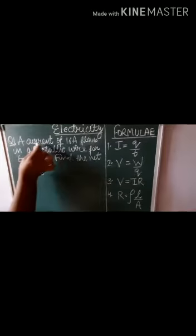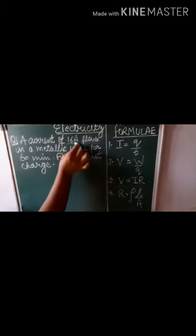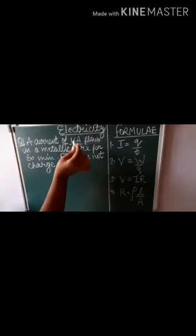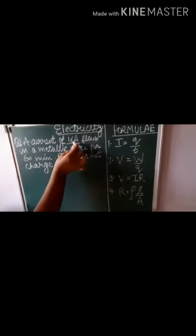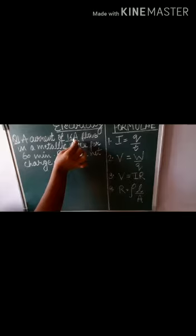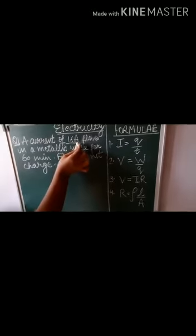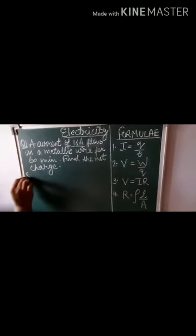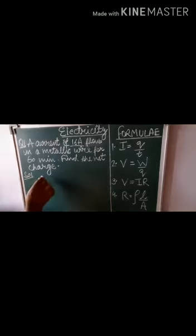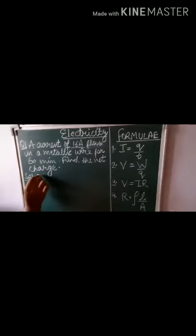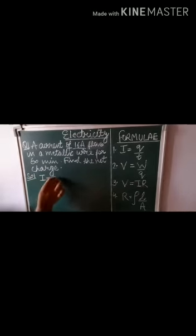As you can see, a current of 16 ampere - by seeing the unit, we can judge the quantity. The unit is ampere, so this is current. Here, side by side, we will write the given information: I is equal to 16 ampere.